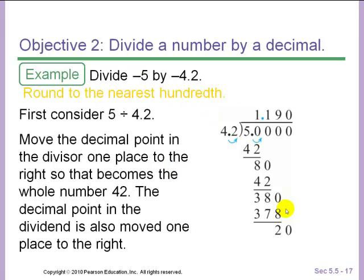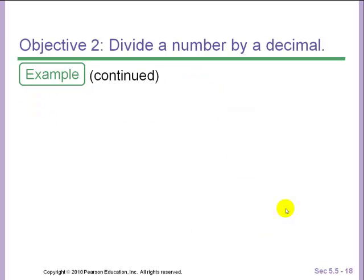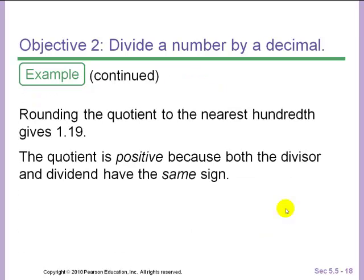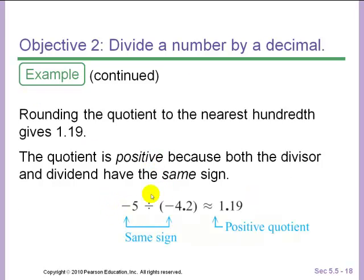Make sure to read your directions very carefully. And again, the answer will be positive because we had the same sign. A negative divided by a negative is a positive. Notice how we have the squiggly equal sign, that's the approximate sign. That is because we rounded our answer. So the answer is not exactly 1.19, it's about 1.19.